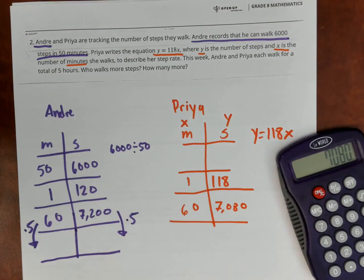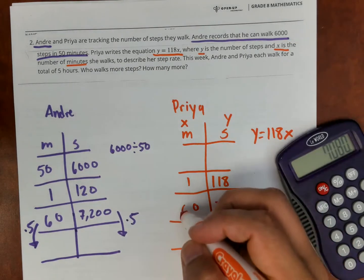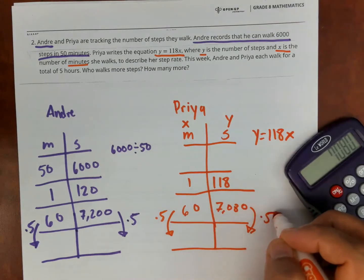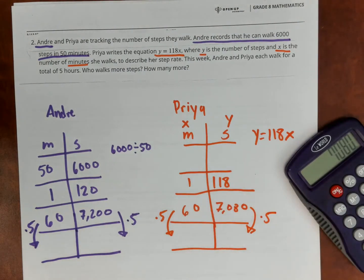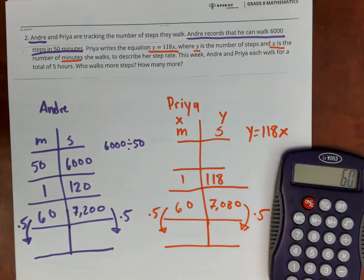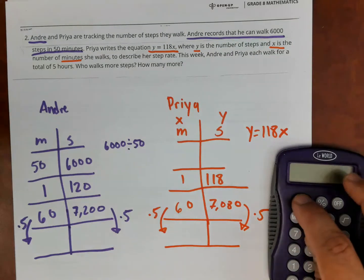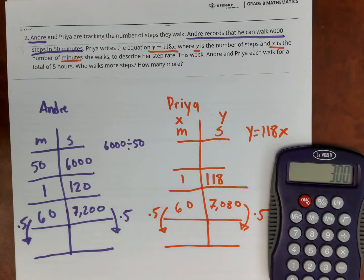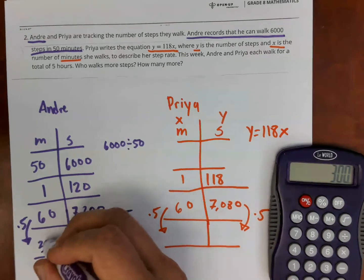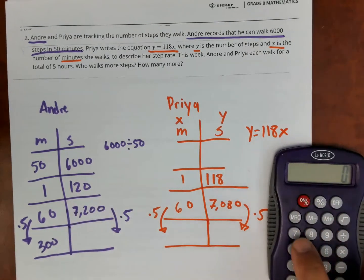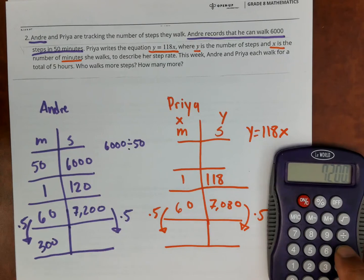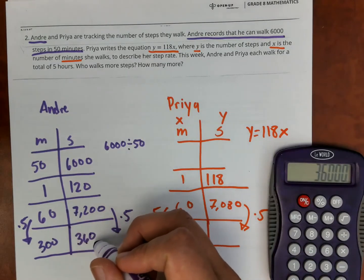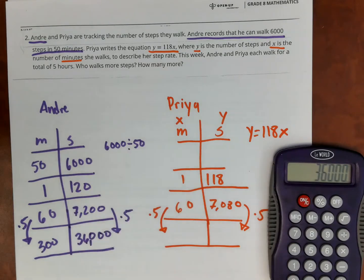Since I know one hour, 60 is one hour. I'm going to do that number times five. That number times five. So I'm going to do 60 times five. That's 300 minutes, which is five hours. So that's 300 minutes. And then I'm going to do 7,200 times five, which is 36,000 steps.